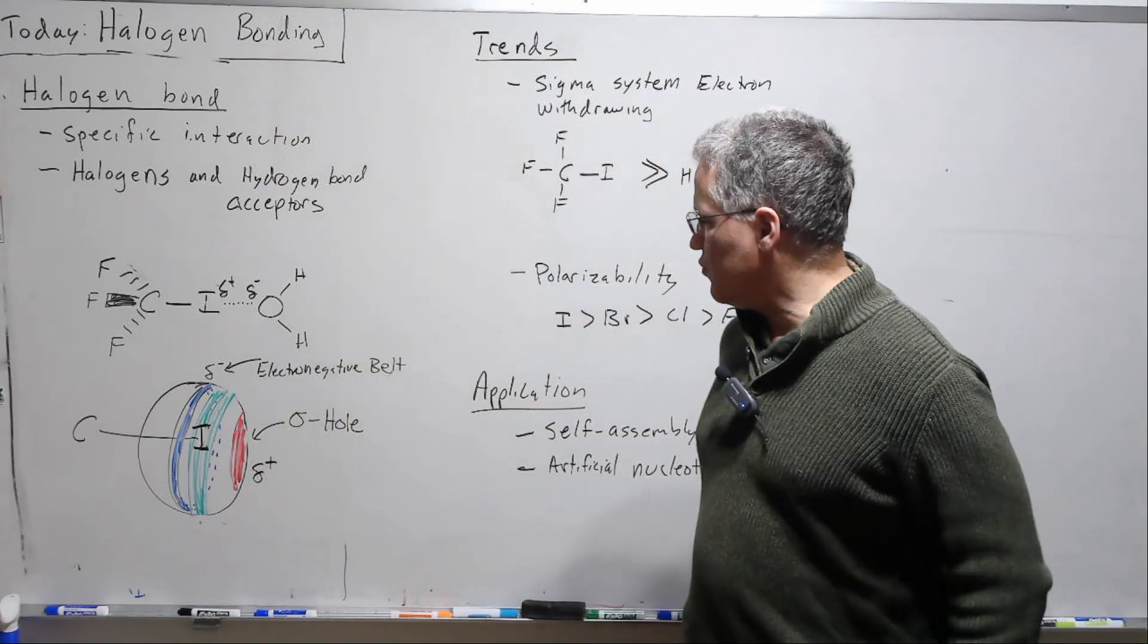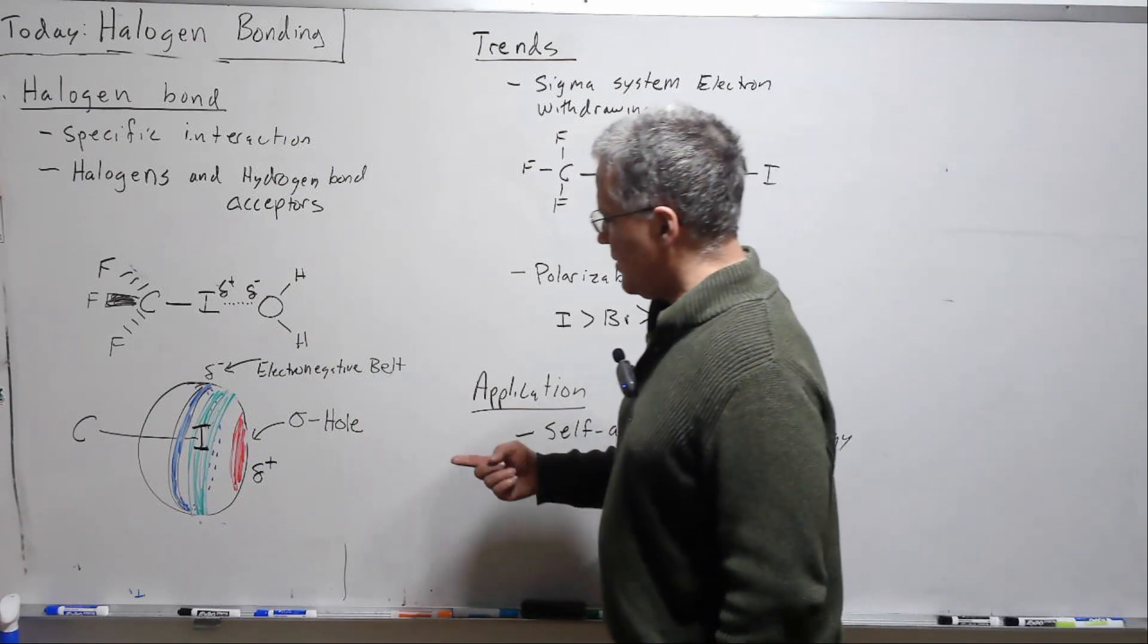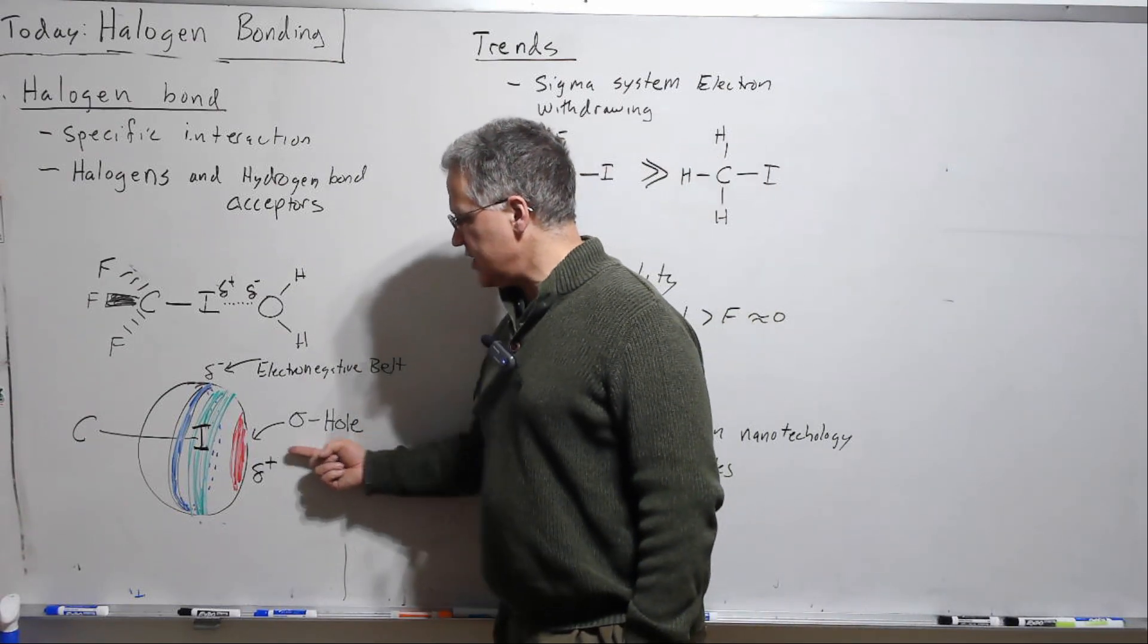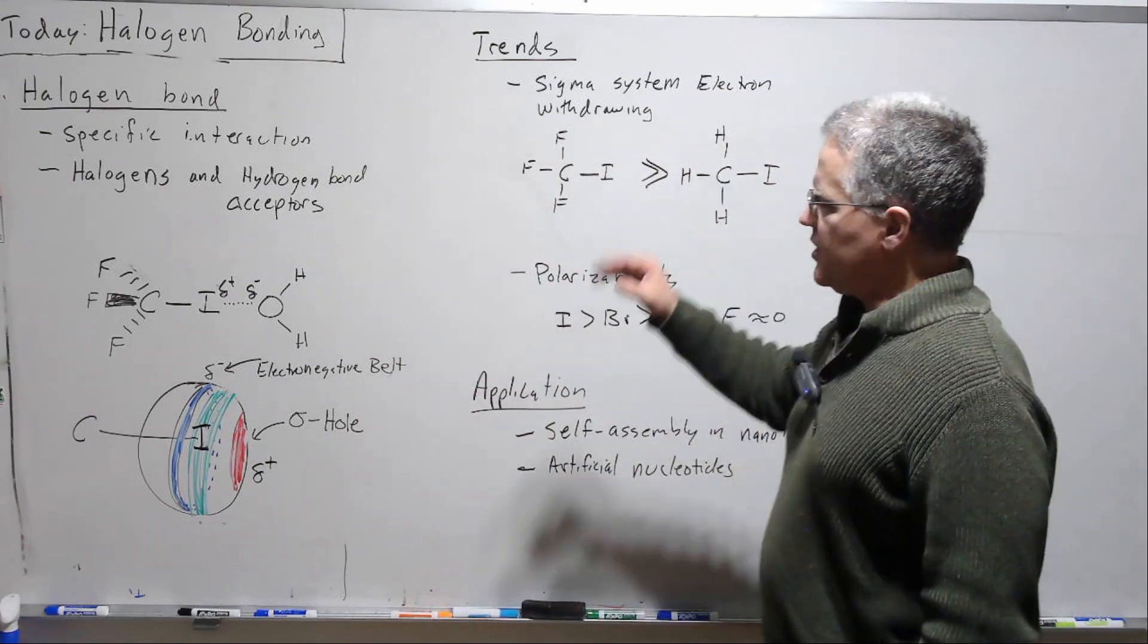Now when it comes to halogen bonding, most of the time they'll be referring to interaction with the sigma hole. Okay, well let's look at some of the trends.